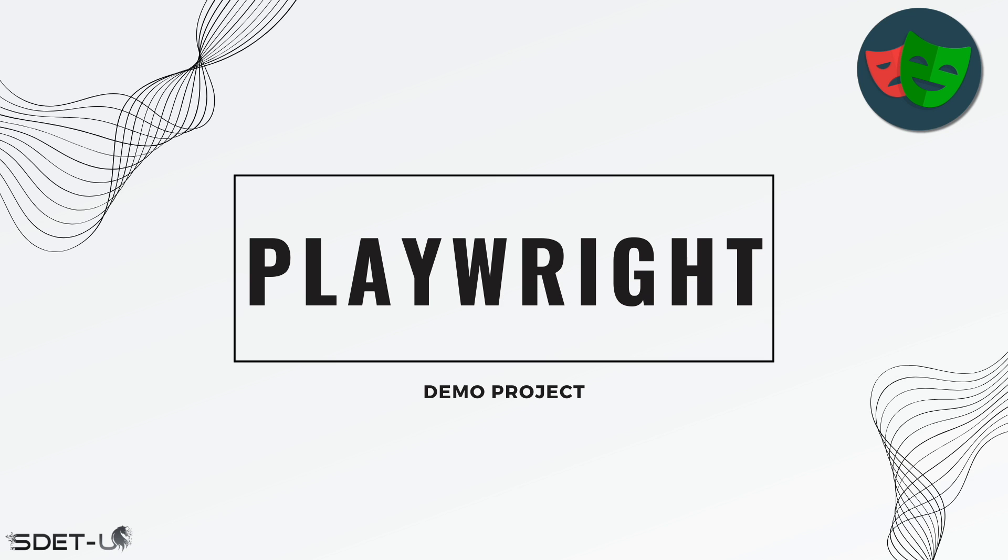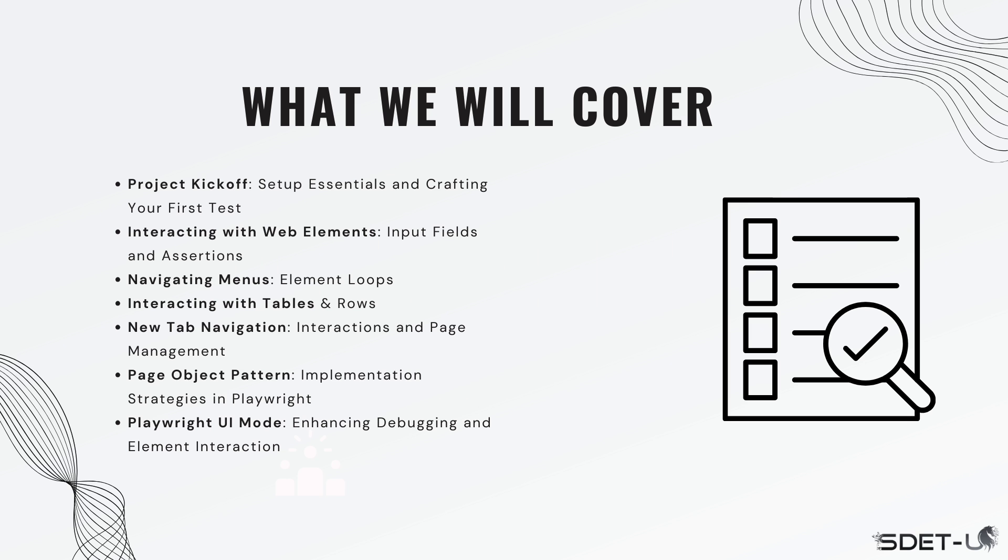Let's take a look at what we will be covering in the next few videos. We will begin with setting up our project from scratch and writing our initial test. Then we will learn the basics of interacting with web elements and understanding assertions within Playwright. After that, we will tackle the challenge of iterating over multiple elements, which is usually a bit complex. Then we will learn how to interact with tables and rows, and also cover how to assert CSS properties. Then we can explore techniques for automating scenarios involving new tabs and effective page management.